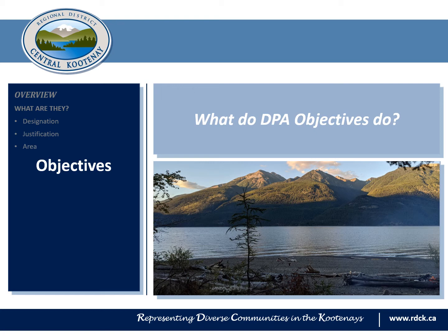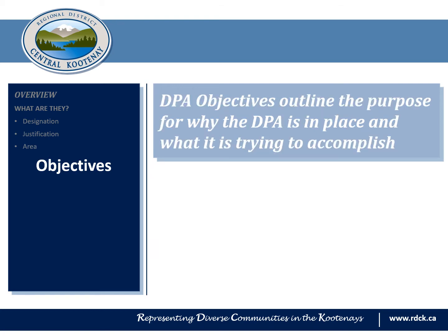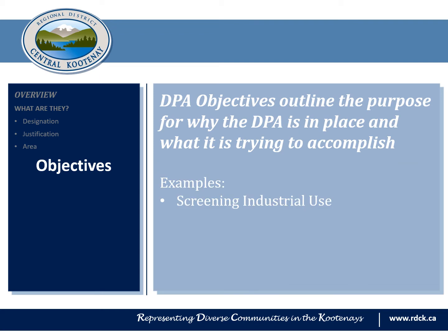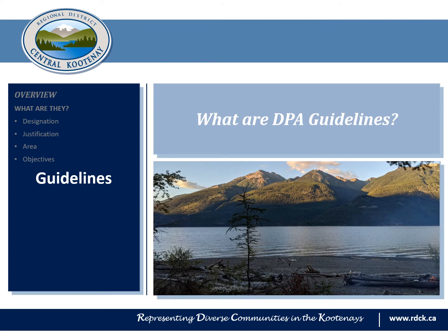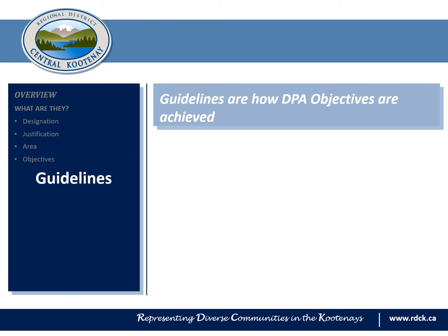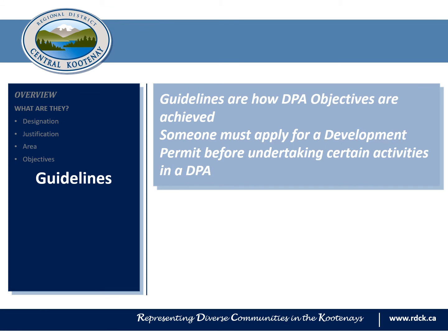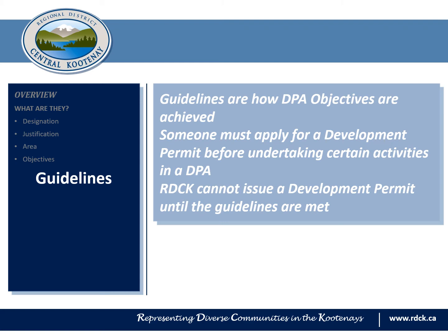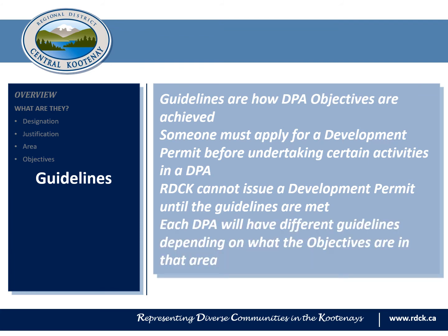DPAs are put in place to achieve a set of objectives. DPA objectives outline the purpose for why the DPA is in place and what exactly it is trying to accomplish. Examples could include screening industrial uses from surrounding areas, protecting water quality, or limiting the risk associated with living near an area prone to natural hazards. The answer to how we achieve these objectives is through guidelines. Guidelines are in place to ensure that the activity or development taking place is carried out in a way that will help achieve the objectives laid out for that DPA. Someone must apply for a development permit before undertaking certain activities within a DPA, and the RDCK cannot issue a development permit until the guidelines for that area are met. Each DPA will have different guidelines depending on what the objectives are in that area.